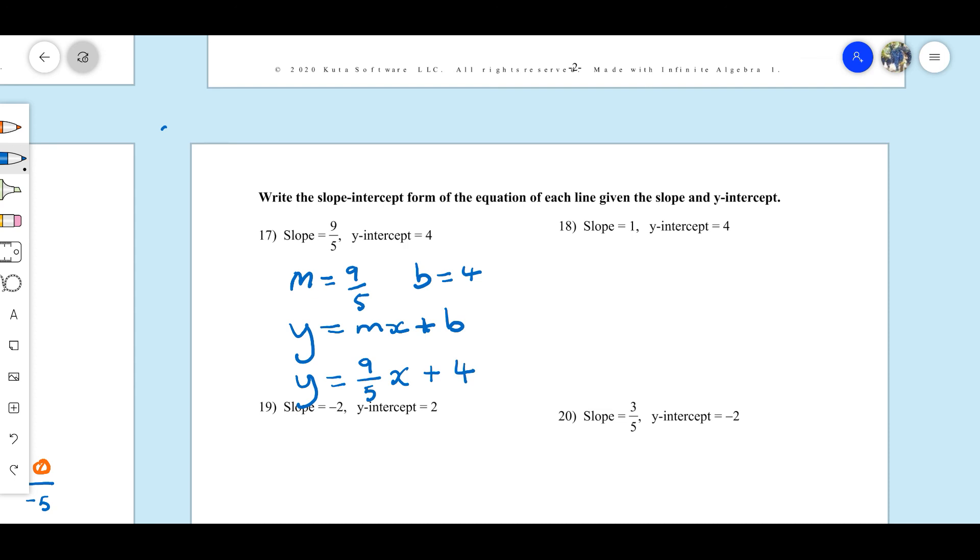So literally in this case like number 18 we can simply say y equal m. M is 1. The slope is 1. X plus b and b is 4. So we can literally just go through that step straight away. But I wanted to show you how it worked with number 17. So this is it. This is how you write the equation of a line given the slope and the y intercept.